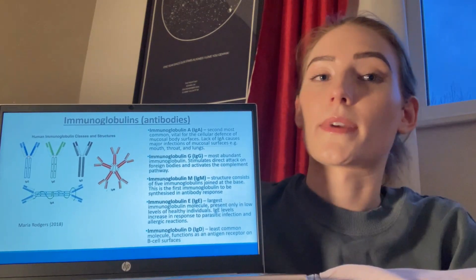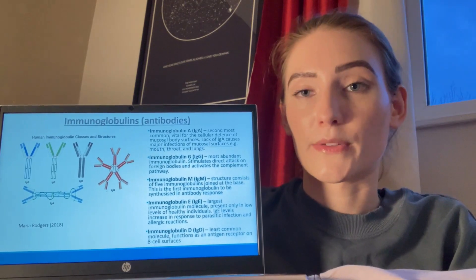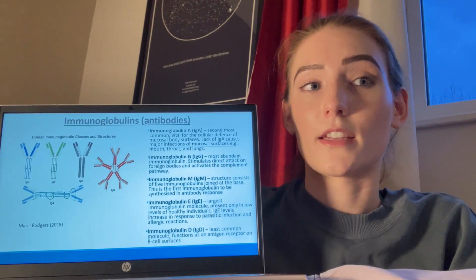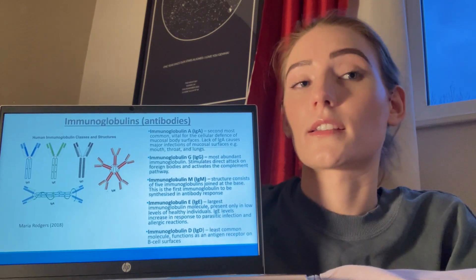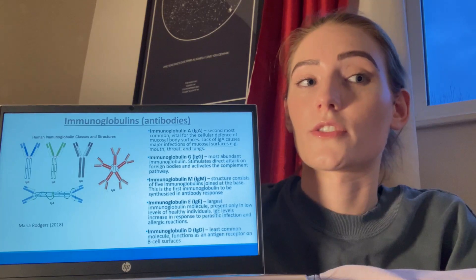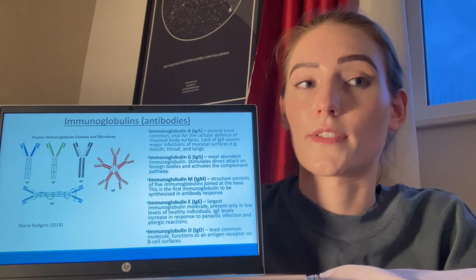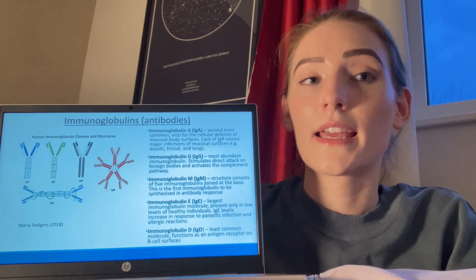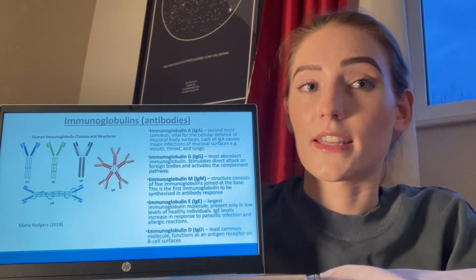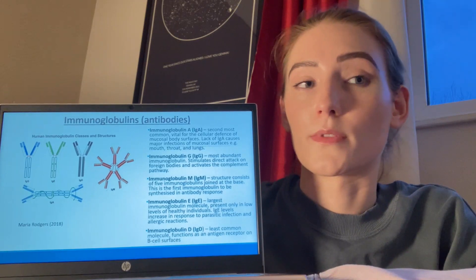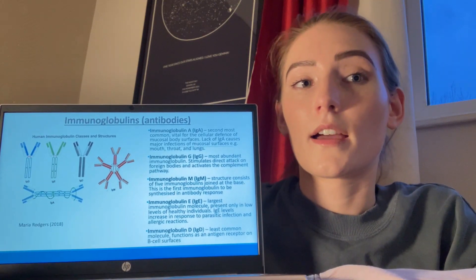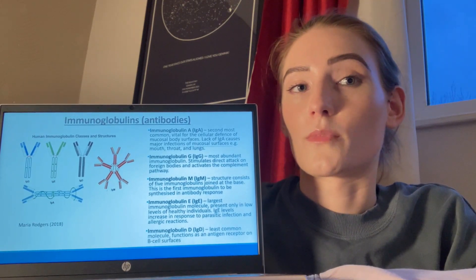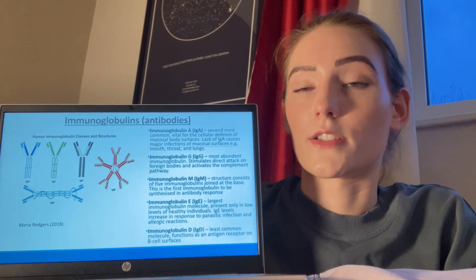Immunoglobulins are antibodies made up of proteins bound to antigens. They play a key role in the immune system response by targeting infection, signalling immune cells, neutralising toxins, removing antigens, and stimulating phagocytes. As you can see in the image, immunoglobulins are typically made up of four chains arranged in a Y shape, with molecules comprising two lighter and two heavier chains.